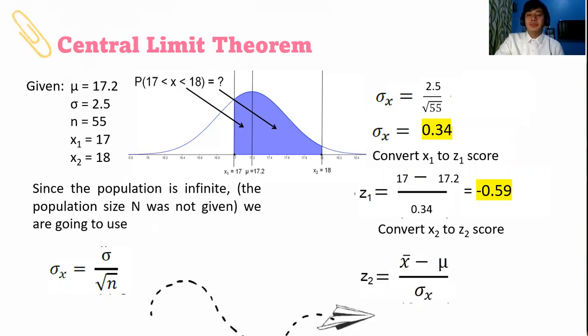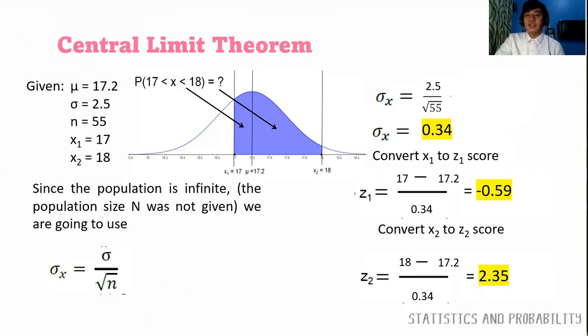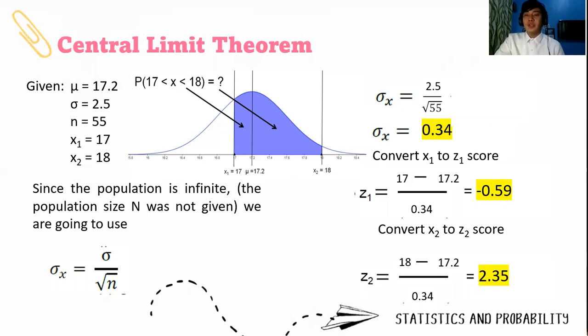Let's convert the second raw score to z₂. We follow the same formula: 18 minus 17.2, the answer will be positive, divided by the standard deviation sampling distribution of the sample means. We will get 2.35. So we have two vertical lines now that represent those z scores, and we have to find the area of negative 0.59 and 2.35 respectively.